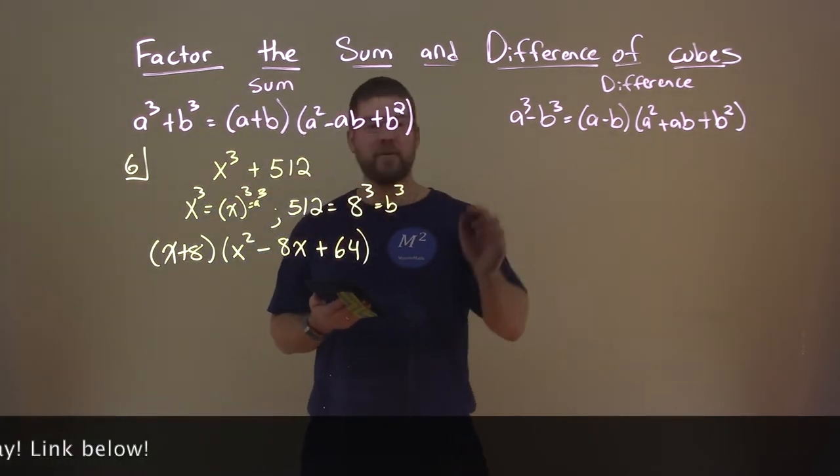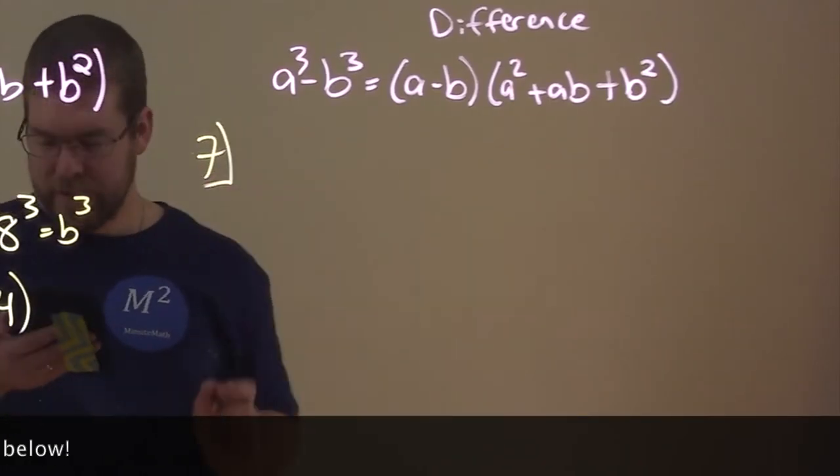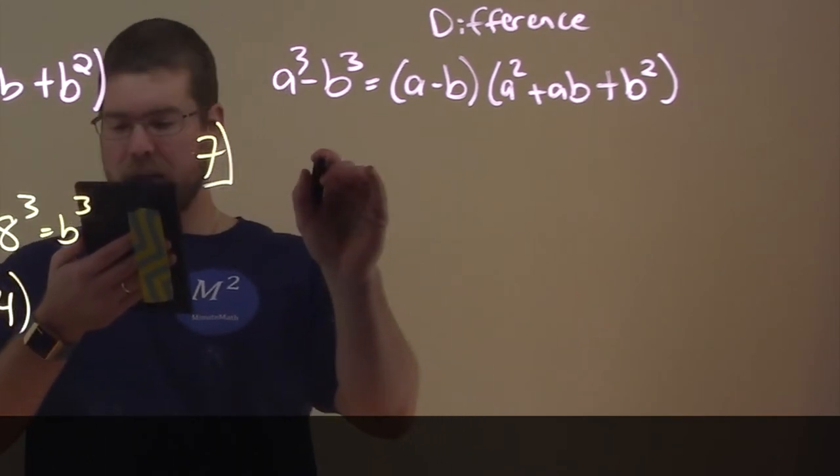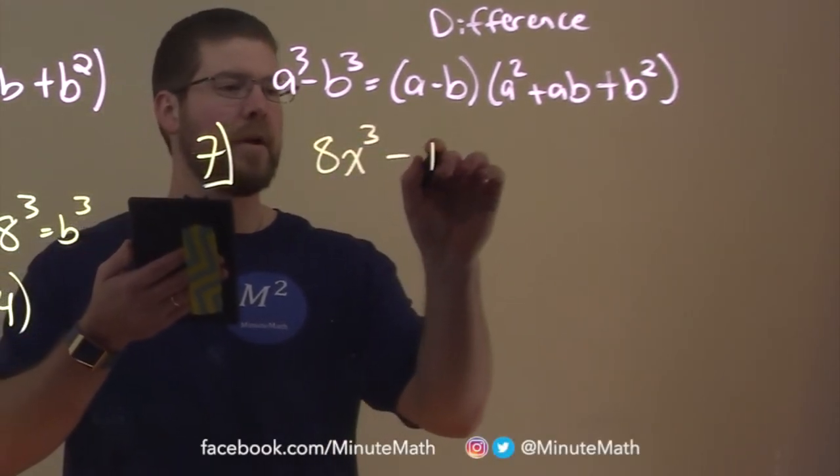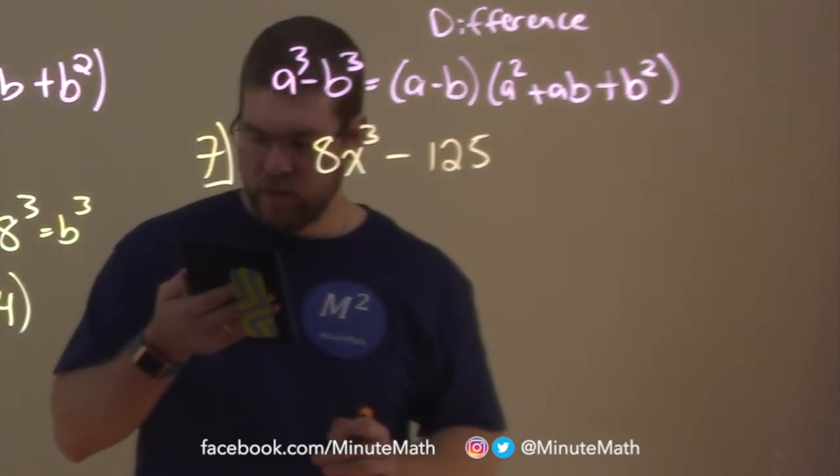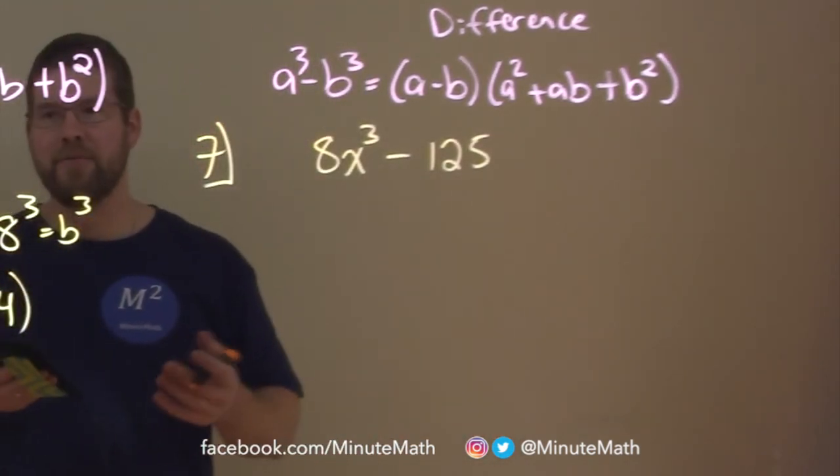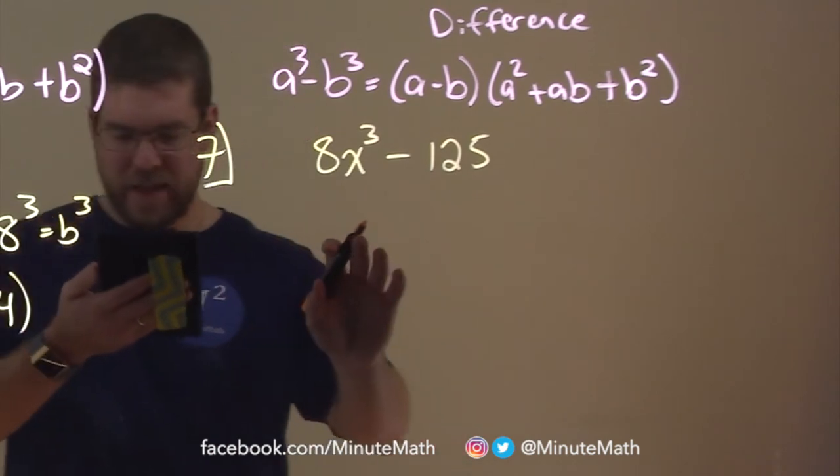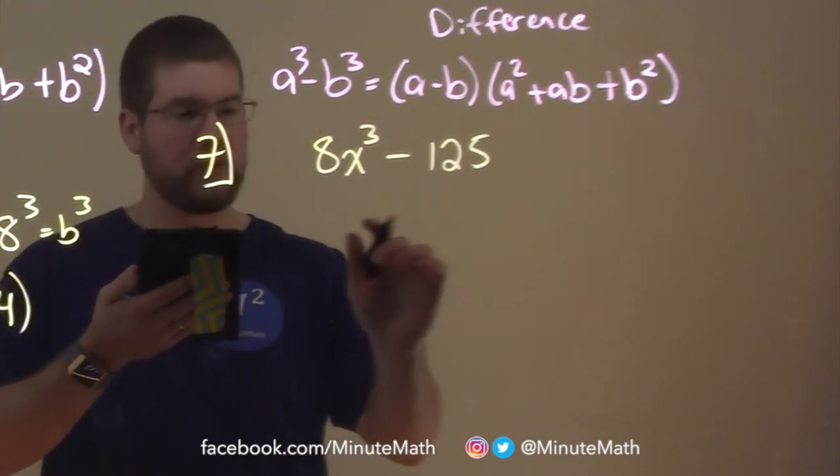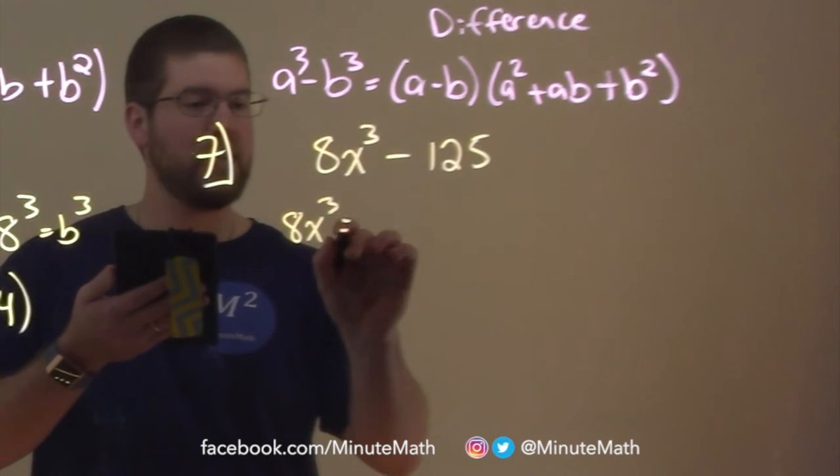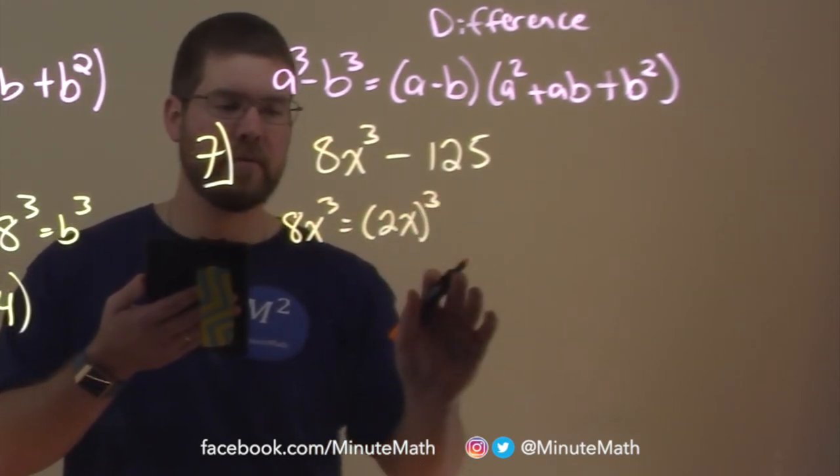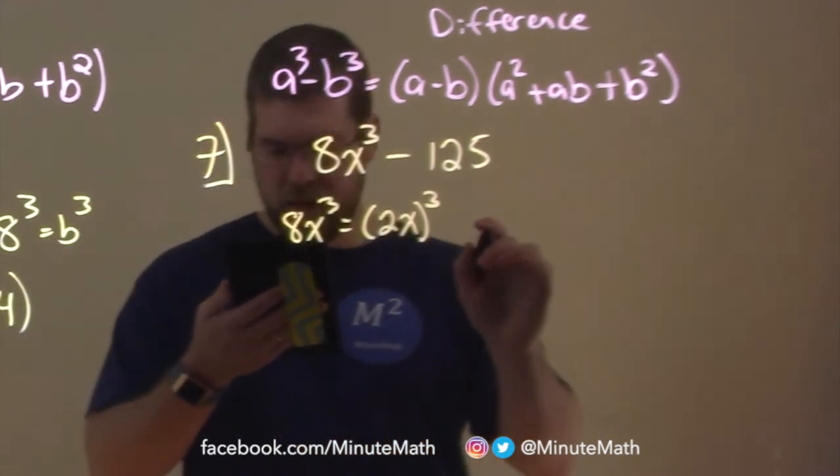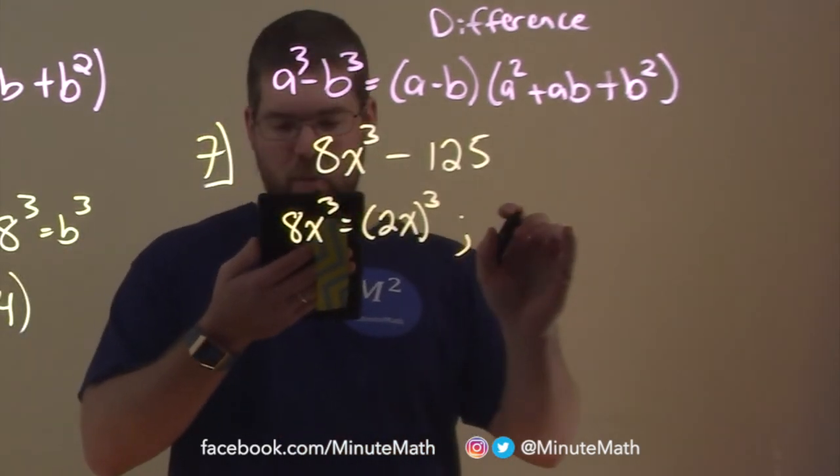So, now let's go with an example for the difference. We want to factor 8x to the third minus 125. Well, we want to see again, do we have cubes here, right? 8x to the third and 125 are both cubes. 8x to the third is equal to 2x all to the third power. Remember, 2 to the third is 8. And what about 125?